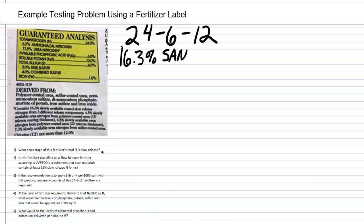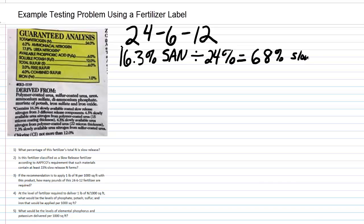Question two asks: is this fertilizer classified as a slow release fertilizer according to the Association of American Plant Food Control Officials requirement that such materials contain at least 15% slow release nitrogen forms? We take 16.3% slowly available nitrogen divided by the total nitrogen of 24%. 16.3 divided by 24 turns out to be right at 68% — so 68% of this fertilizer is classified as slow release.